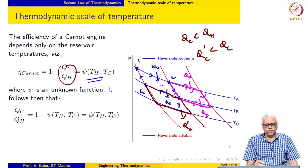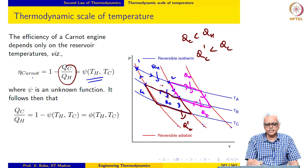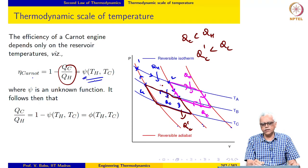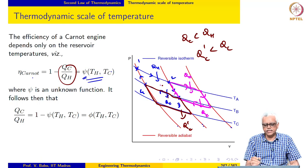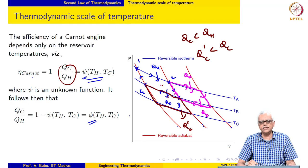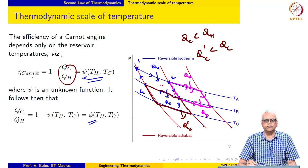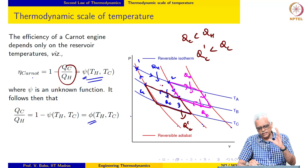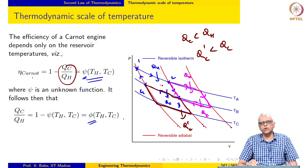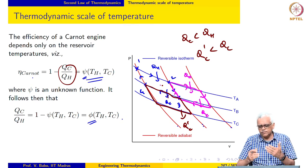So QC over QH — the efficiency itself — is a function psi of the reservoir temperatures TH and TC. QC over QH may be written as some unknown function phi of TH and TC. That is the most important point: the ratio QC over QH is a function only of the reservoir temperatures.